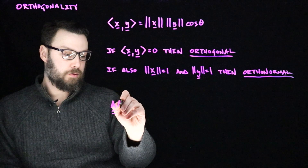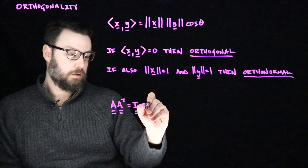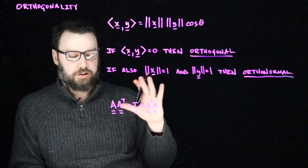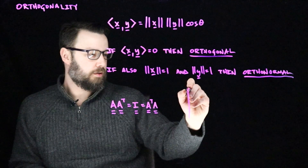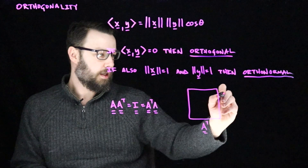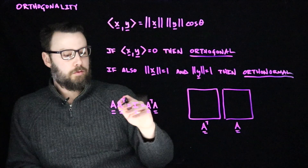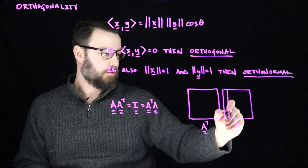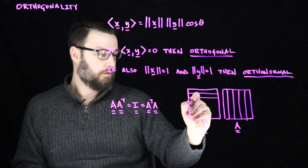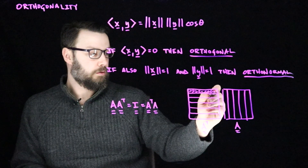If A is an orthonormal matrix, what that means is that A transpose A equals the identity. One way to see why this happens is to think about the matrix A and its transpose — we have A transpose A, where the columns of A are orthonormal vectors, and so they then are the rows of A transpose.